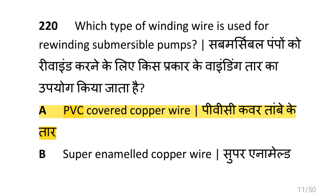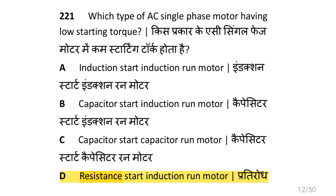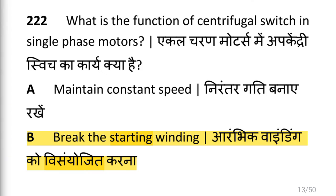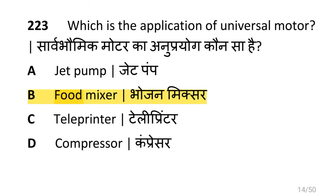Which type of winding wire is used for rewinding submersible pumps? That is PVC covered copper wire. Which type of AC single phase motor has low starting torque? That is resistance start, induction run motor. What is the function of centrifugal switch in single phase motors? That is to break the starting winding. Which is the application of universal motor? That is food mixture.